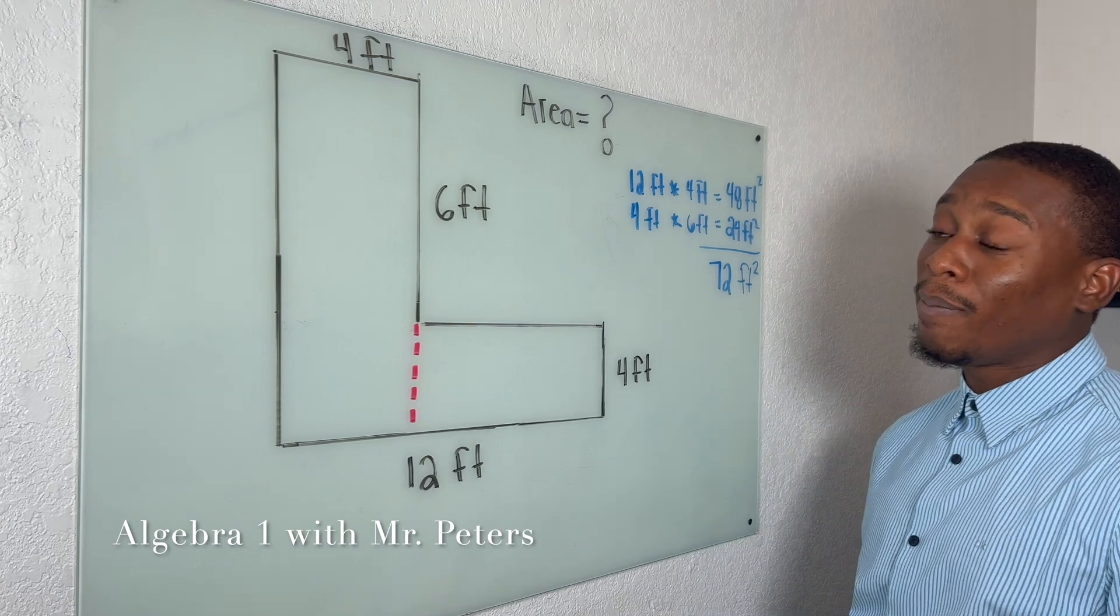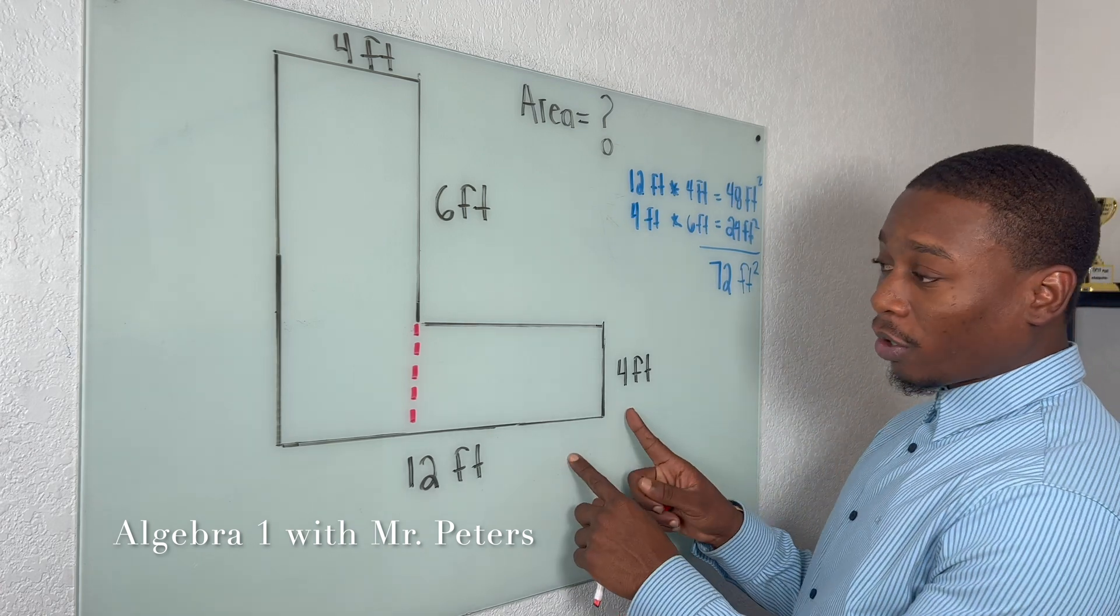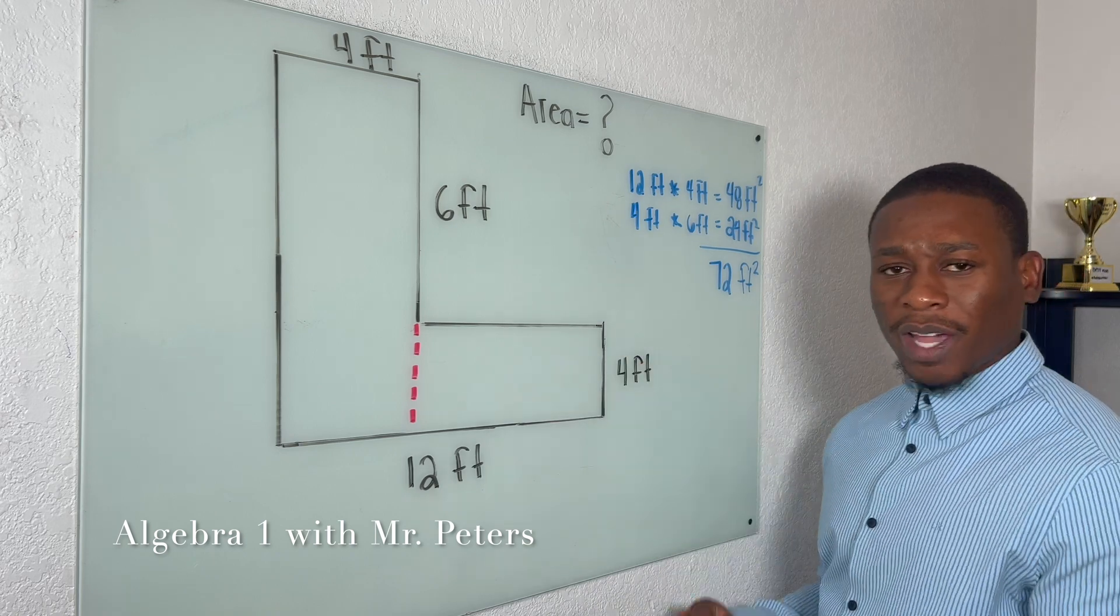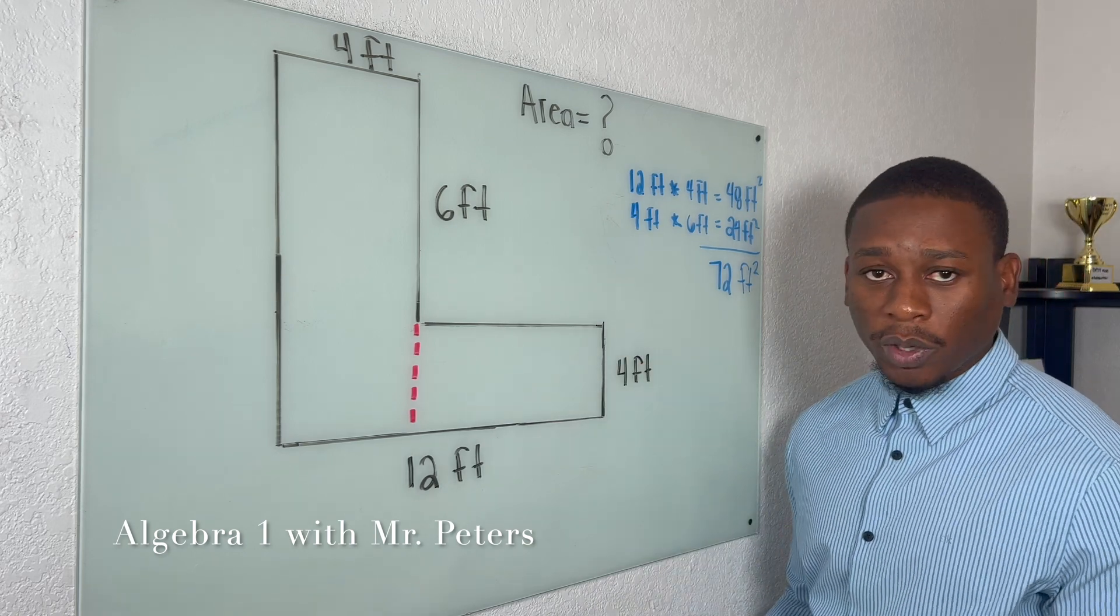Well, for one, it's going to change our dimensions. So when we look here, we know our length, right? Doesn't matter which one we call length or width, as long as we include both. But let's say this is four feet, so we know our width is four feet.